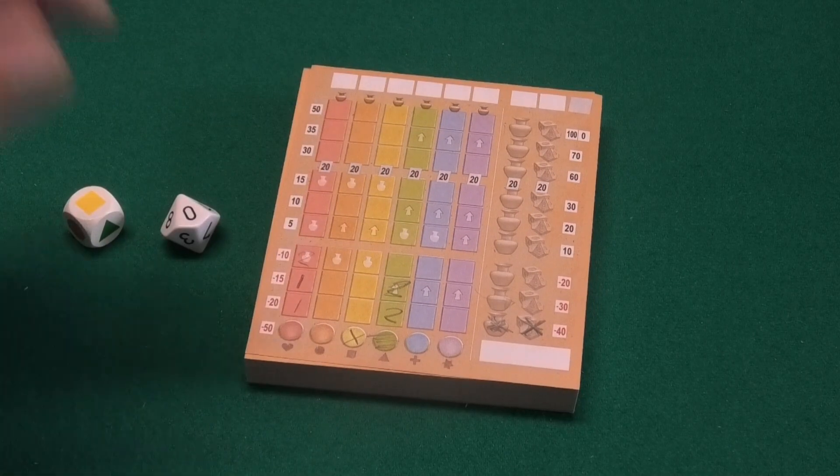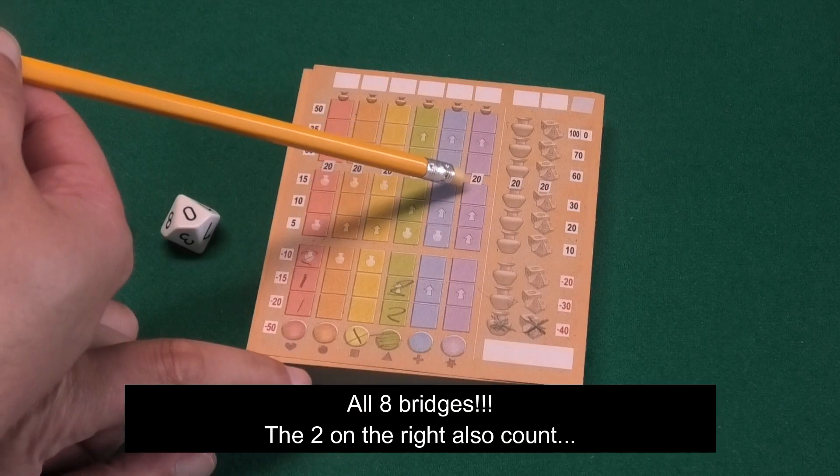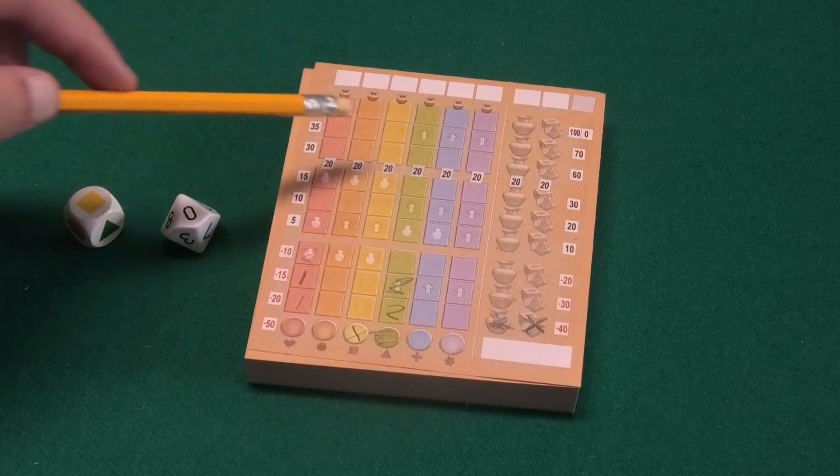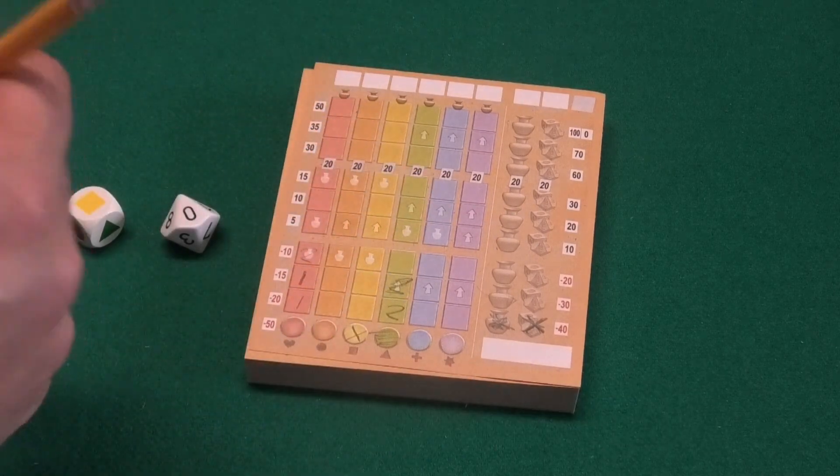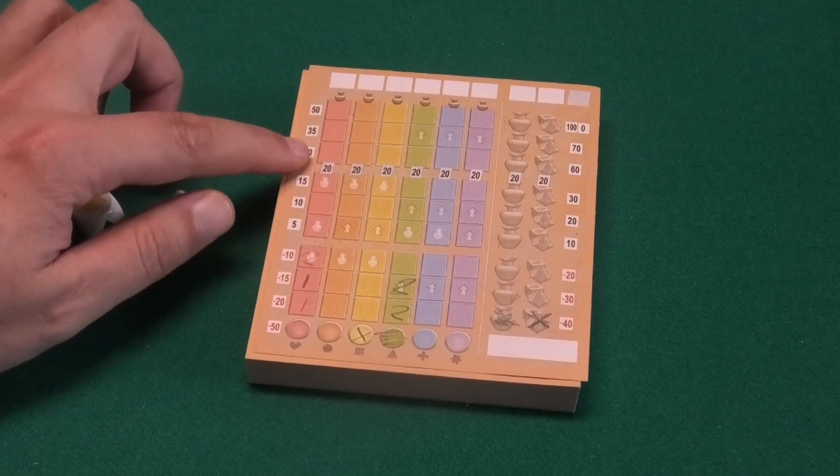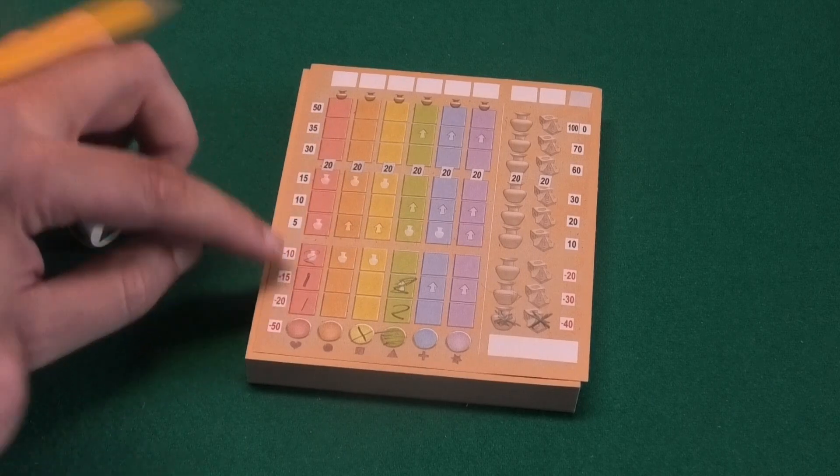And so when does the game end? The game ends when all six colored bridges are passed, but in total. So maybe I crossed three bridges and another player crossed two and another player crossed one. Those bridges are special.